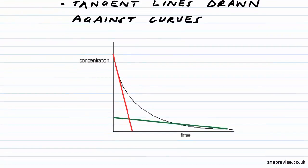So here you can see an example graph, where we have concentration on the y-axis and time on the x-axis. Now this graph, interestingly, is a curve, and it's incredibly difficult to find out the exact gradient of a curve, so what we do is we plot tangent lines against the curve.